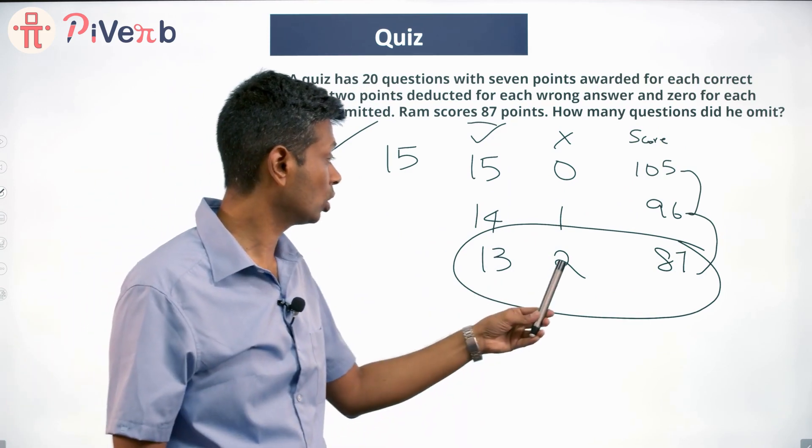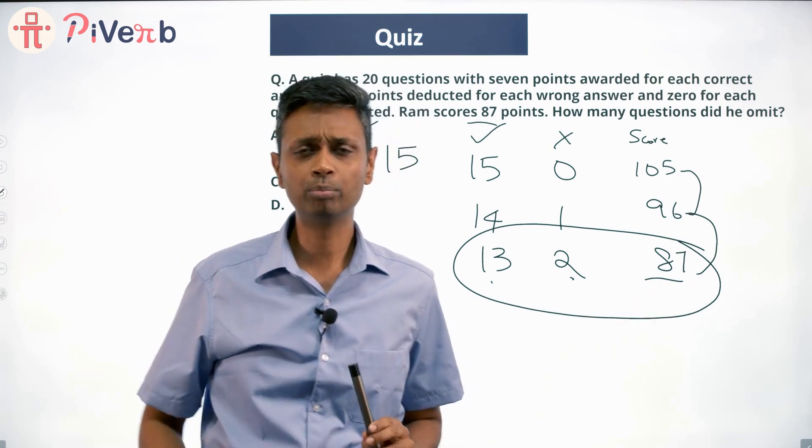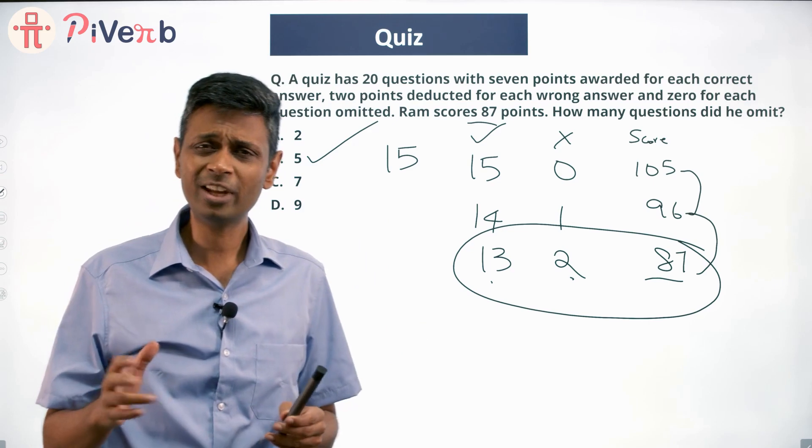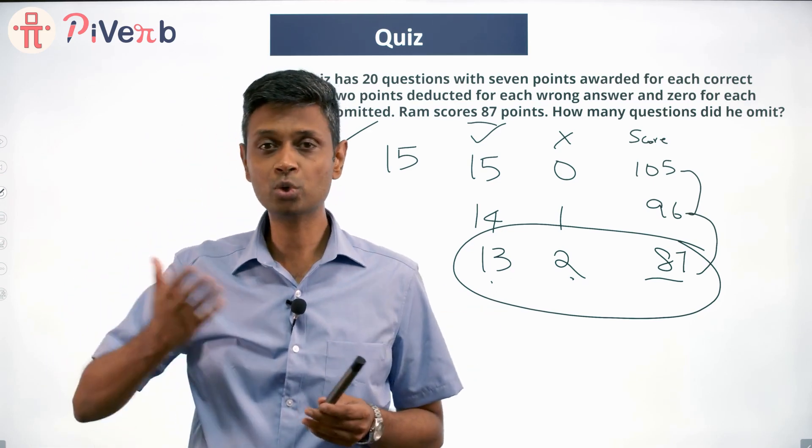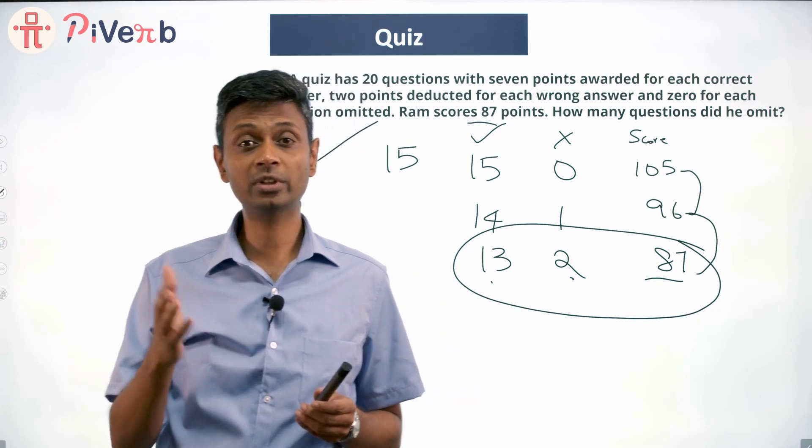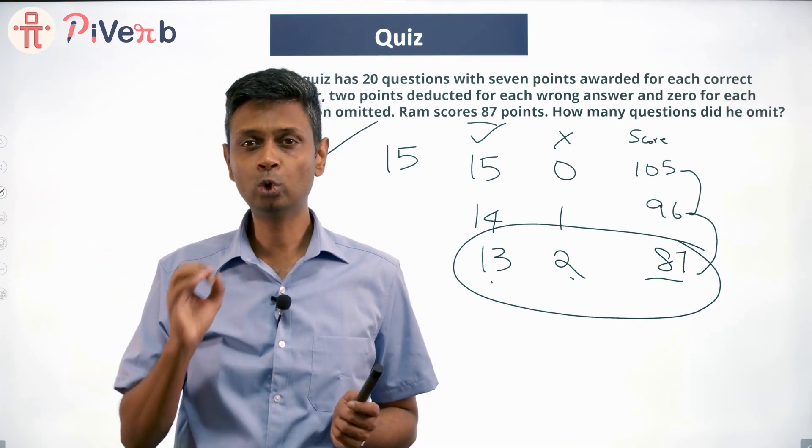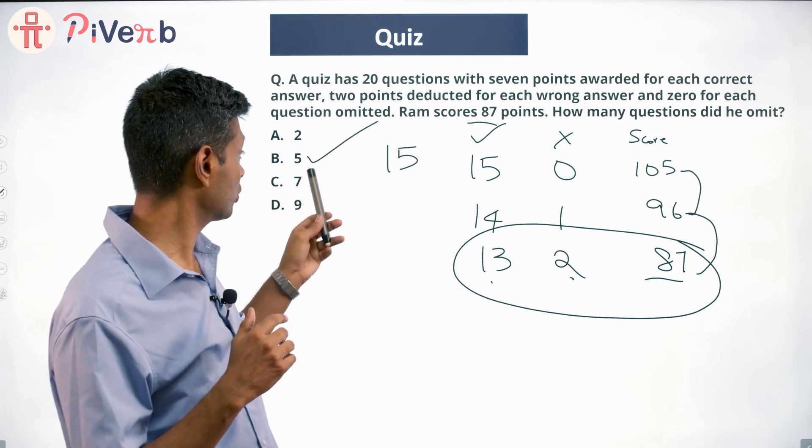That's a beautiful question. Go methodically, go from the choices. You can frame equations and solve this, but doing this way is better. The question says 20 questions. I know that you could have skipped two or five or seven or nine. Let me assume you skip two, that means you have attempted 18. All 18 right takes you to 126. One going from right to wrong makes it minus 9.